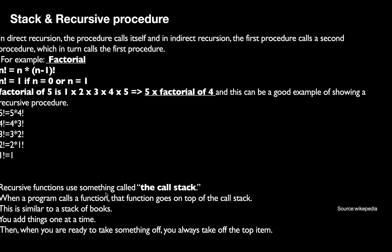A recursive function uses something called the call stack. When a program calls a function, the function goes on top of the call stack. This is similar to a stack of books — you add one book at a time, and when you are ready to take something off, you always take the top item. Similarly, factorial calls are pushed one at a time, then popped from the top to compute the final answer. This is how the recursive call procedure works.